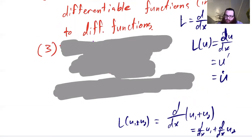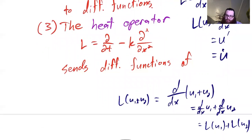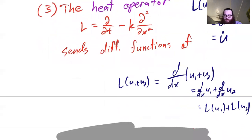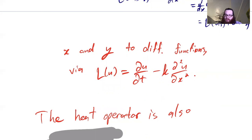The third example is closest to what we're interested in: the heat operator. This operator L takes the time derivative of whatever function you plug in and then subtracts k times the second derivative in x. It acts on differentiable functions of two variables, and outputs another differentiable function. So L(u) means: take the time derivative of u and subtract k times the second spatial derivative of u.